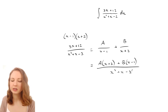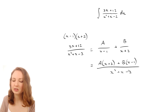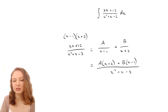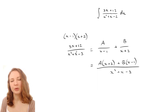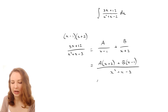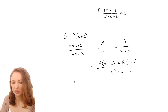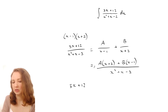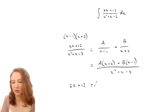What we want is for this to be the same thing as the original expression no matter what x is. We just need to work out what A and B need to be. I'm going to rewrite this without the denominator - since it's the same on both sides we can ignore it.